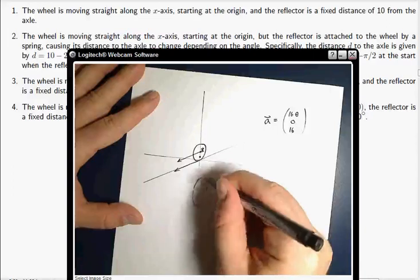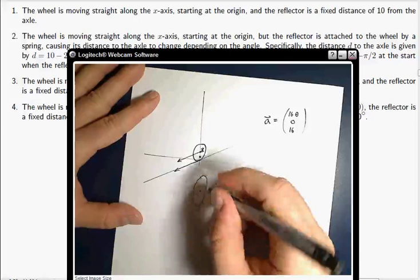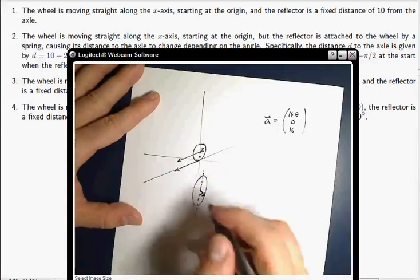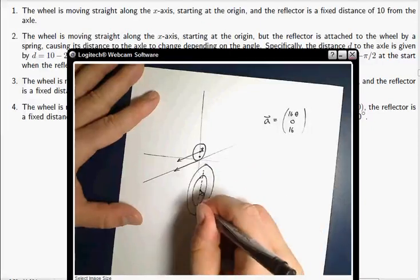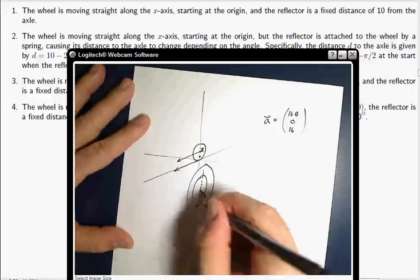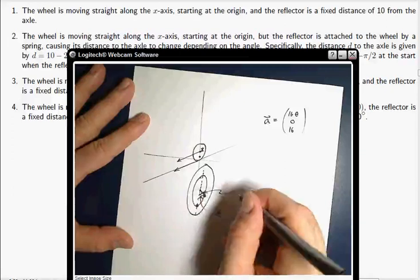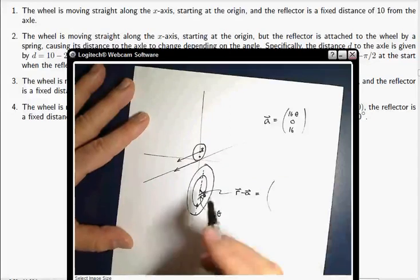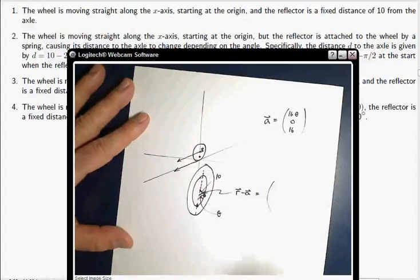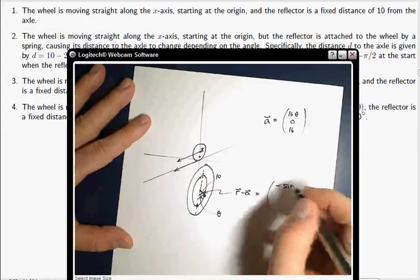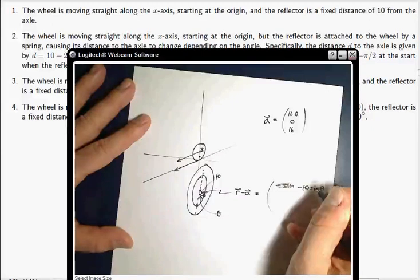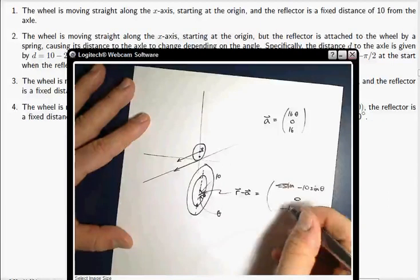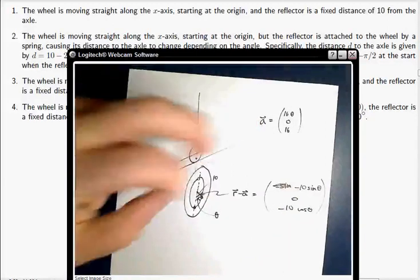Then from the axle, let me draw a bigger version of the picture here. Here is the vertical starting point. And then as it's rotated, the actual reflector - here's the wheel, here's the reflector's starting point, and then the reflector is there. And if it's rotated by some angle theta, then that little vector r minus a is easy to write down with a little bit of trig. So that distance there is 10. It's going to be negative 10 sine theta. The y-coordinate is always 0, and the z-coordinate is negative 10 cosine.